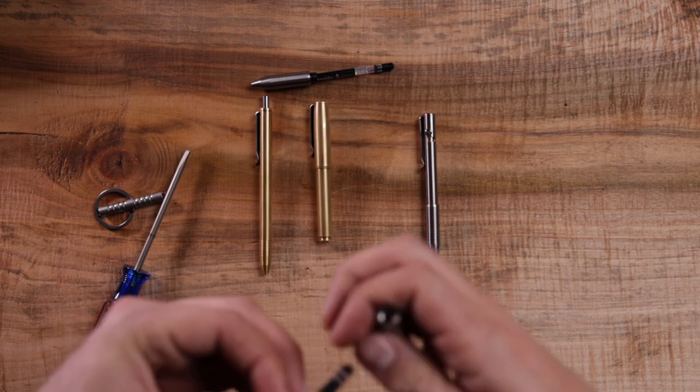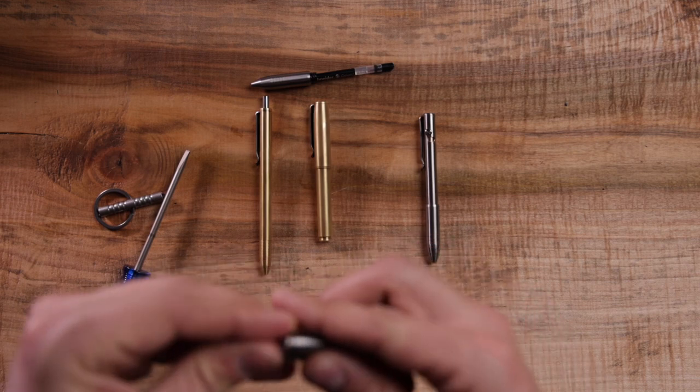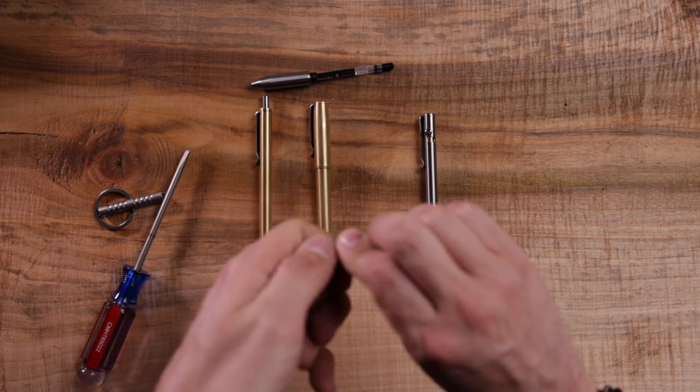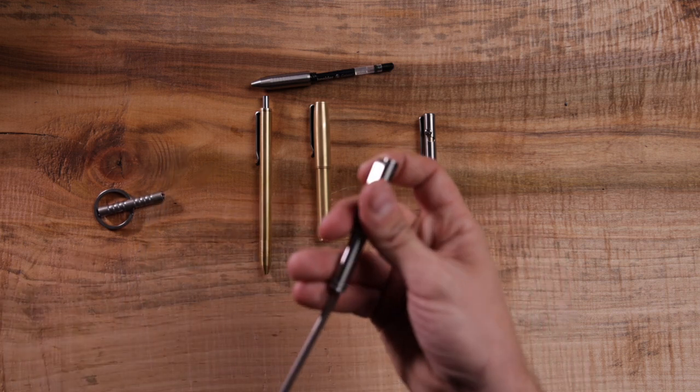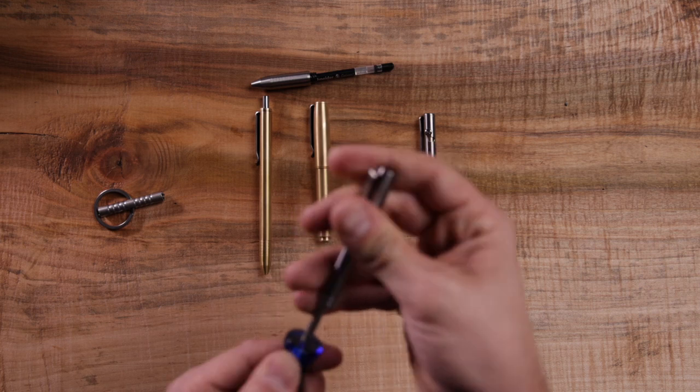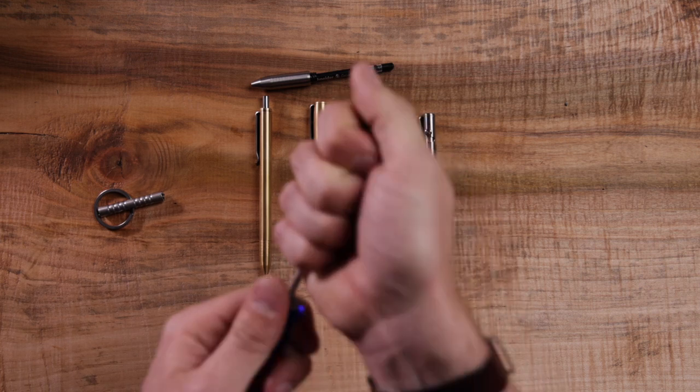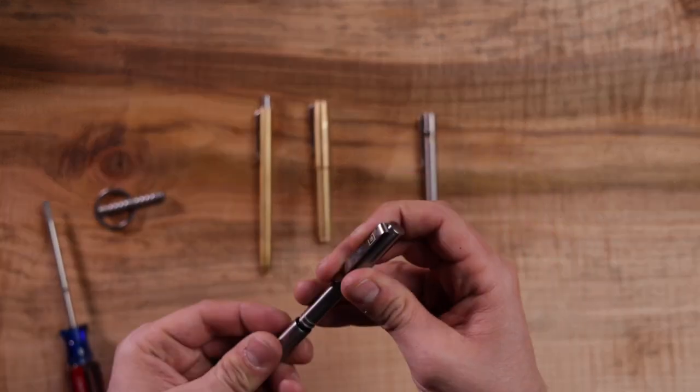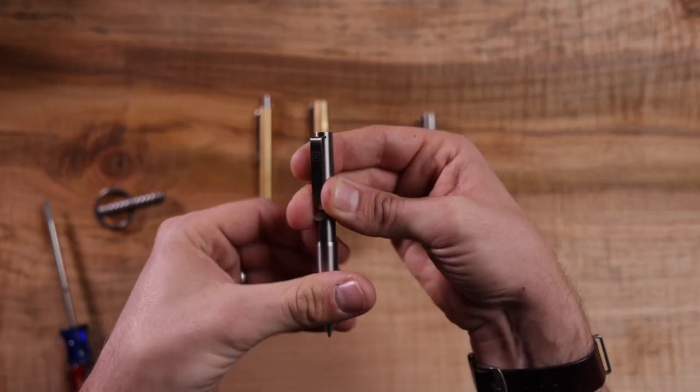When you're done making your adjustments, again reverse thread. So it's going to feel like you're loosening it, but you're actually tightening it down. There we go. And righty-tighty. Good to go.